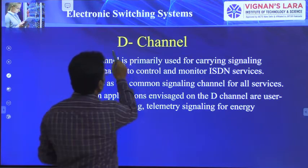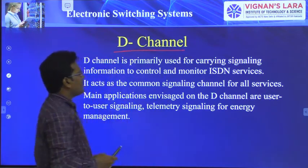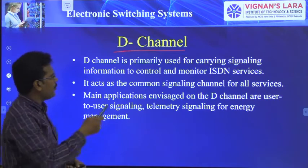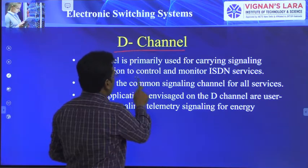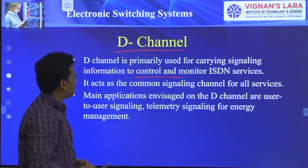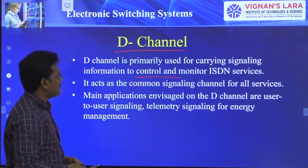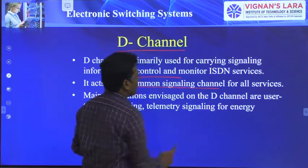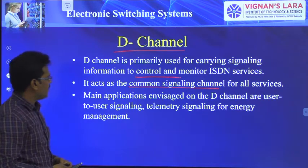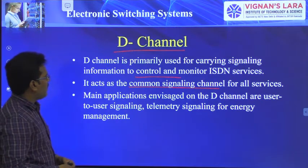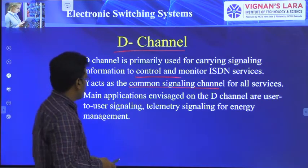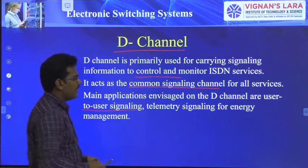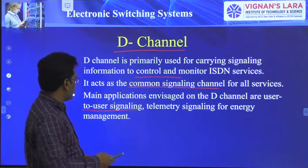Next is the D-channel. The D-channel is primarily used for carrying signaling information to control and monitor ISDN services. It can also be used as a common channel signaling for all services. The main applications of the D-channel include user-to-user signaling and telemetric signaling for layer management.